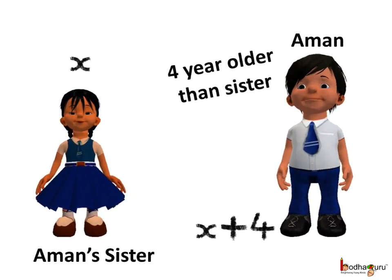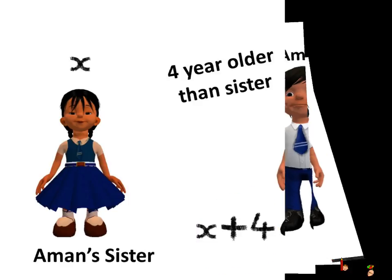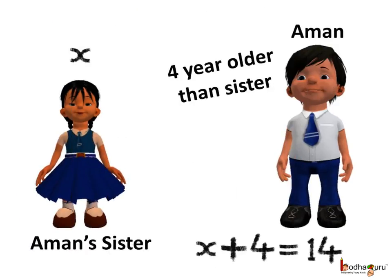Say his sister's age is x. So x plus 4 is Aman's age. Now Aman's age is 14. So we can say x plus 4 is equal to 14.